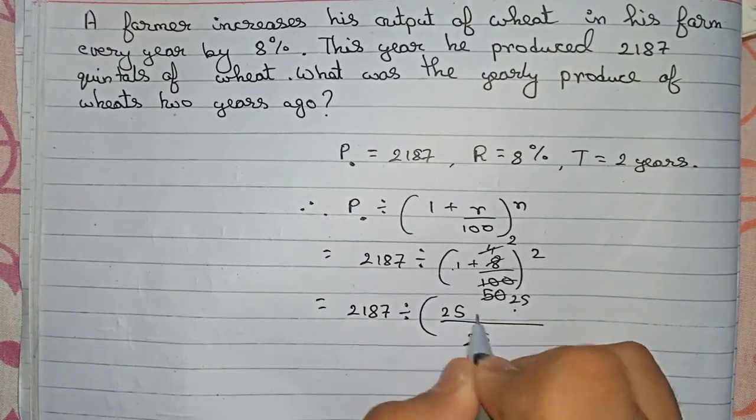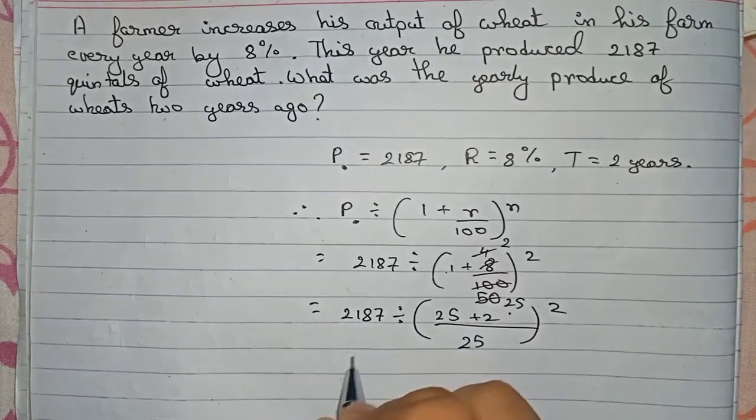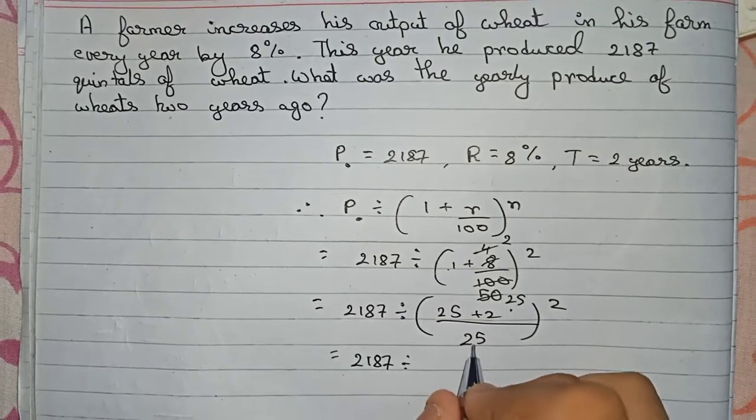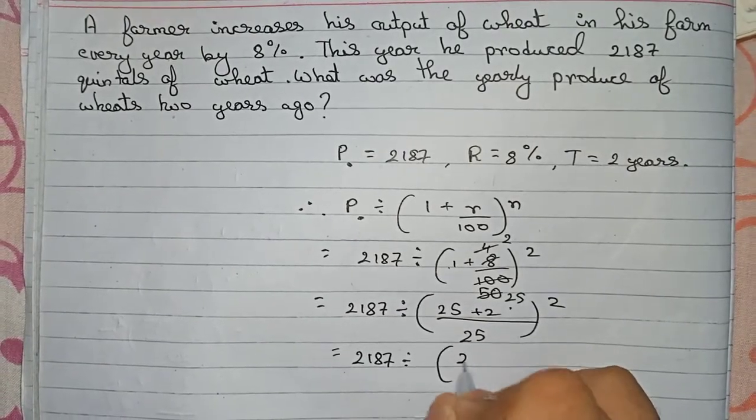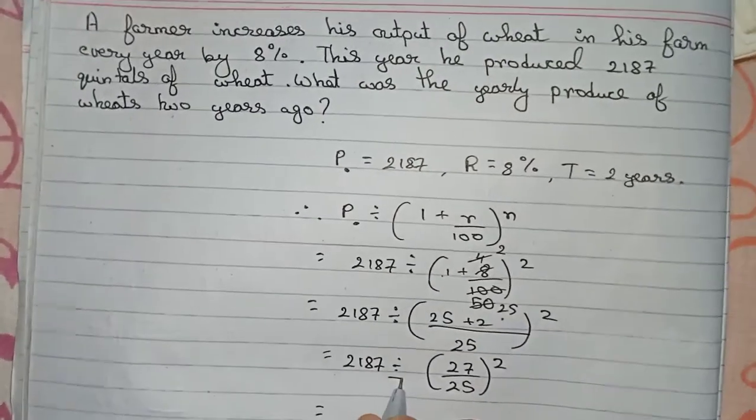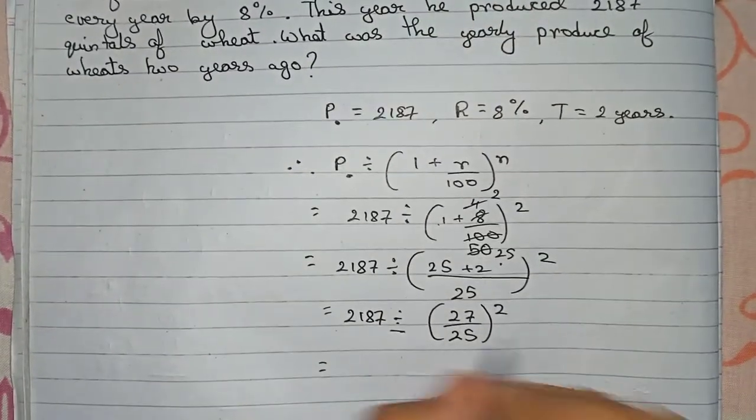2187 divided by (27/25)². So now we change the division sign to multiplication. For that, we have to reciprocal this number. So 2187 multiply...